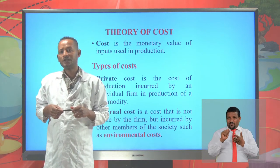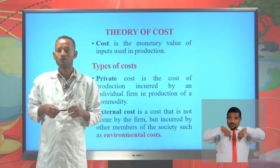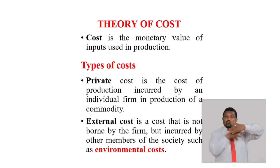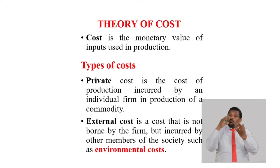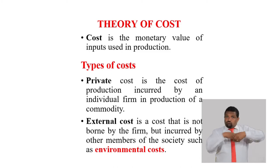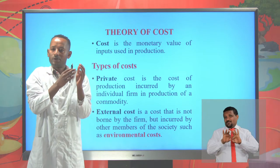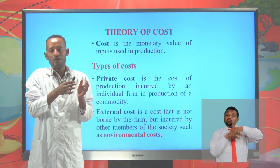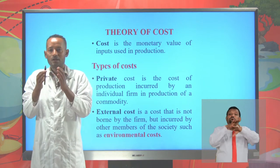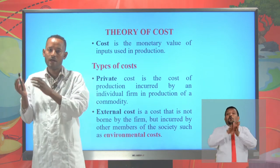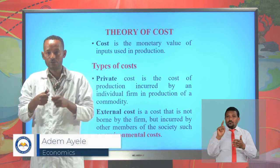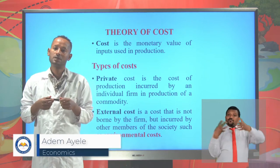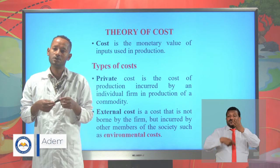Today we are going to see the theory of cost. Cost is the monetary value of inputs used in production. In order to produce the outputs, we need the inputs. But we cannot get the inputs simply from the land, the river, or air — rather, we need to spend money. The monetary value of inputs used in production is called cost.